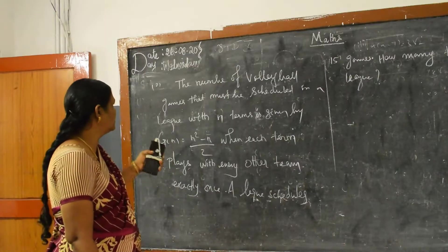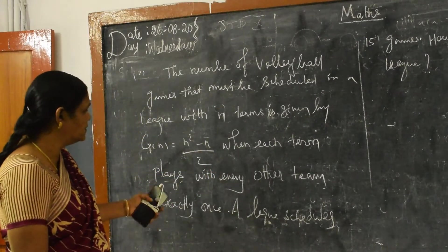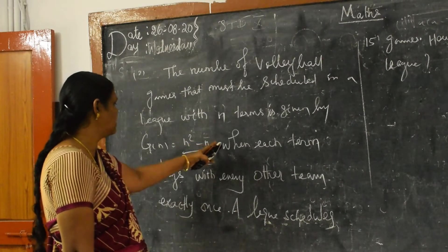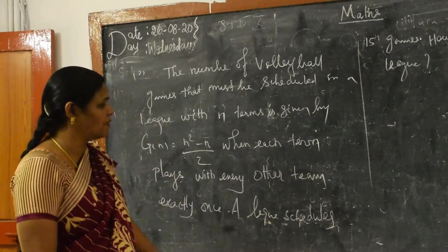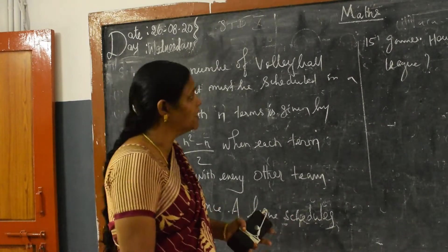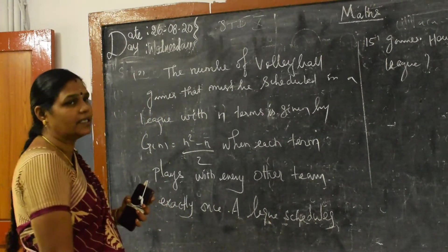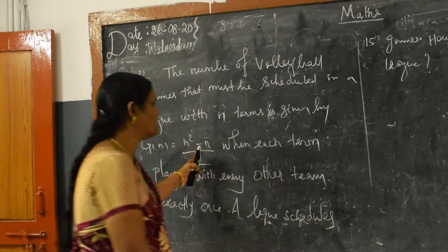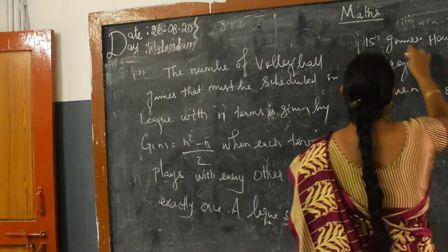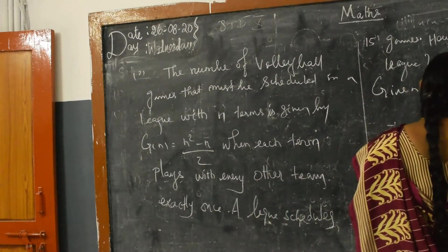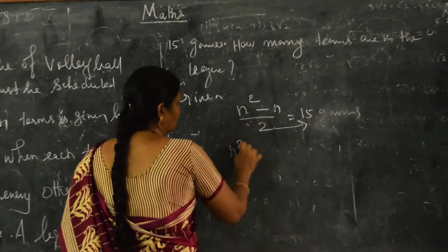Now the word problem: the number of volleyball games that must be scheduled in a league with n teams is given by (n² - n)/2. Each team plays with every other team exactly once. If the league schedules 15 games, how many teams are in the league? Set up the equation: (n² - n)/2 = 15. Cross-multiplying: n² - n = 30.